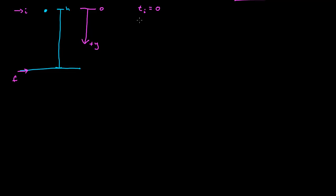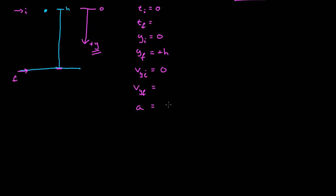What do I know? My initial time equals 0. My final time equals something. I'm on the y-axis now. My initial y-position is 0. My final y-position is when it hits the ground — in the positive y-direction, so it's a positive value of h. My initial velocity in the y-direction is 0. My final velocity in y is my unknown. My acceleration has magnitude g; the acceleration due to gravity points toward the center of the earth, which for this system is in the positive y-direction. So the acceleration is positive g.